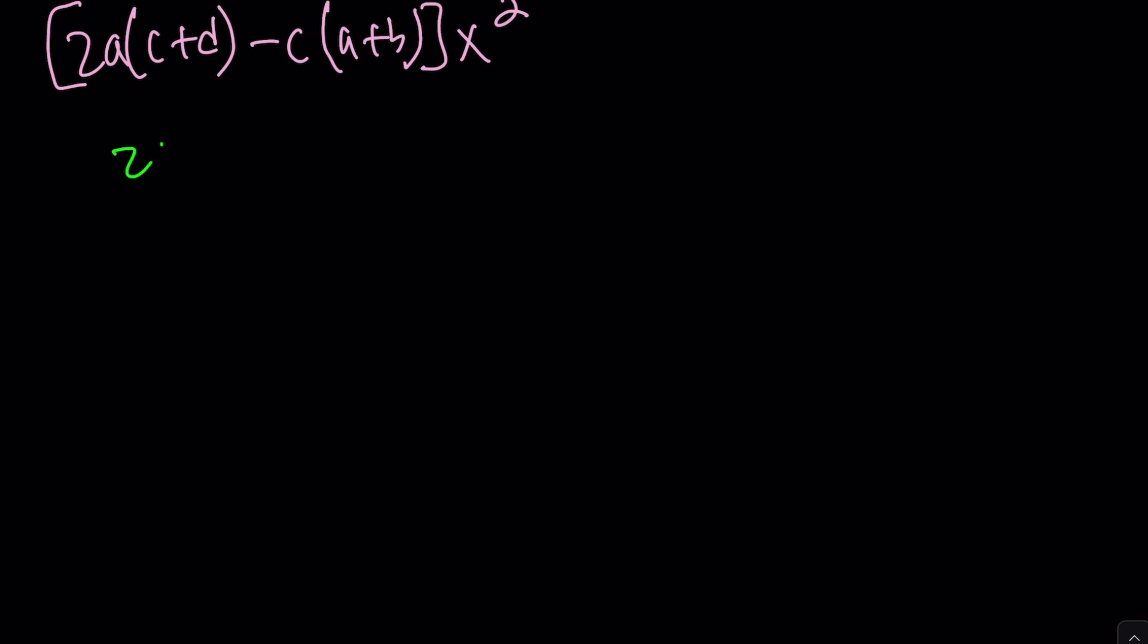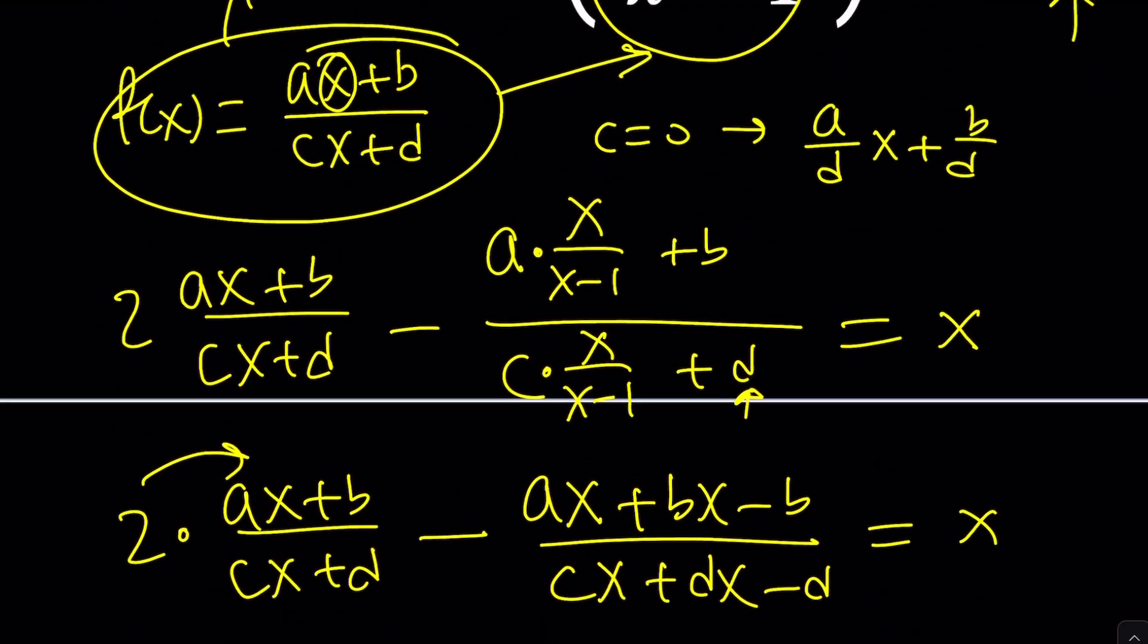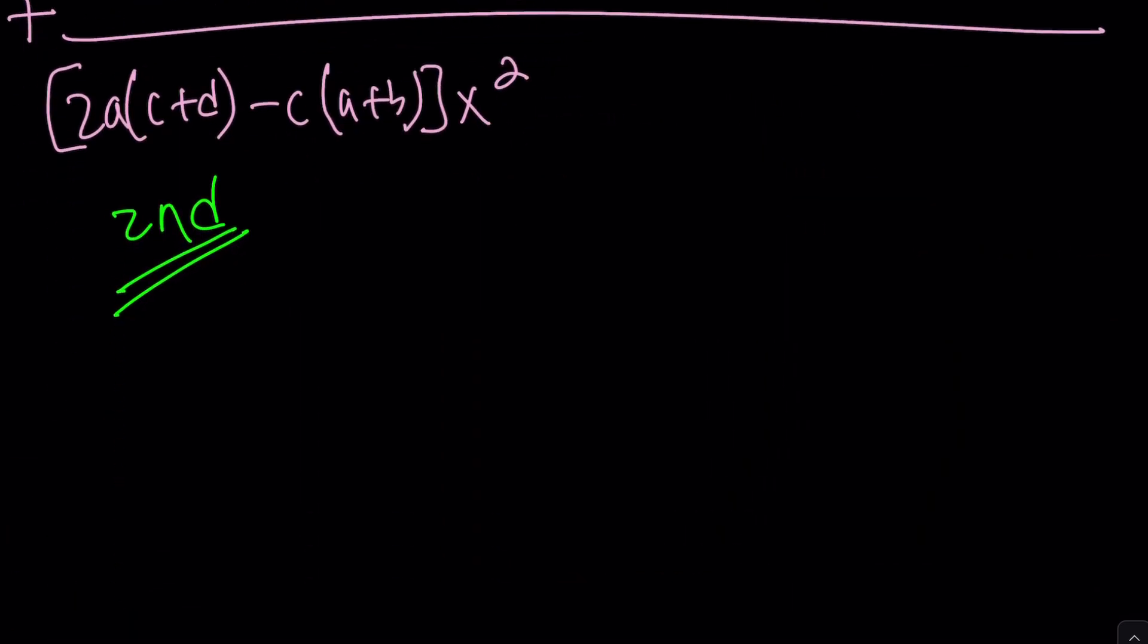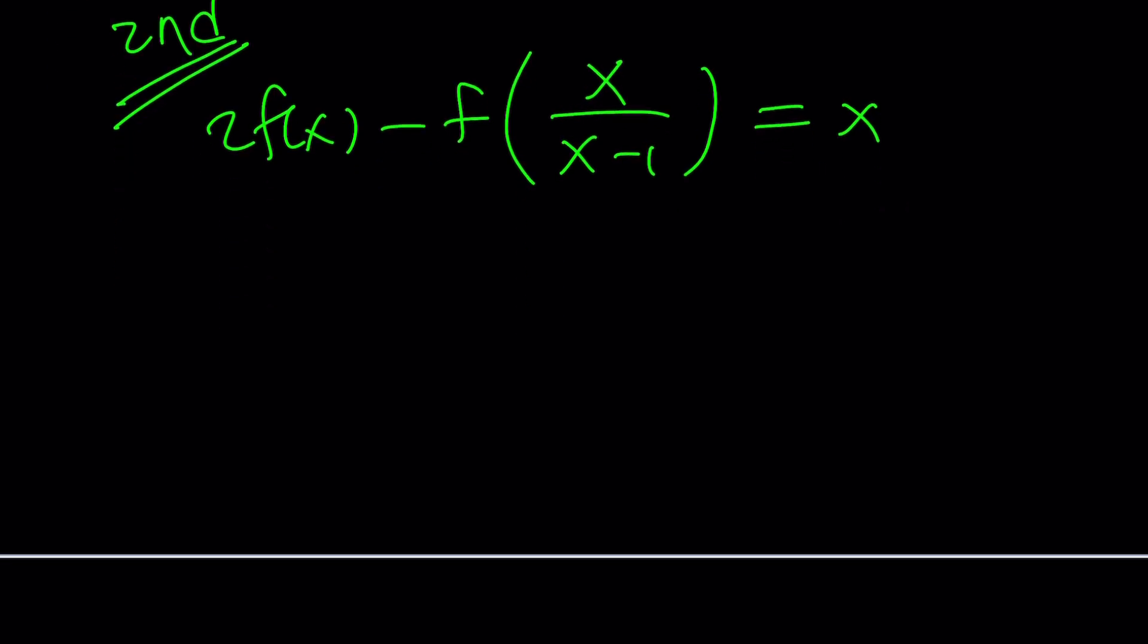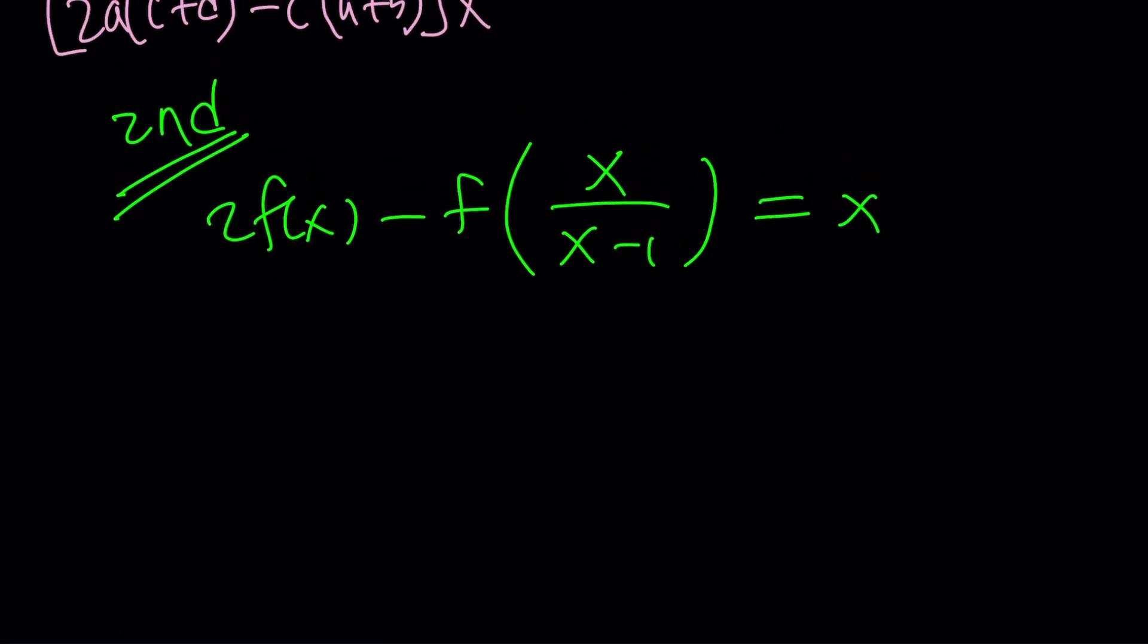So let's go ahead and see how we can solve this problem with the second method which is my favorite obviously. So we have 2 times f of x minus f of x over x minus 1 equals x and we're supposed to find f now. Instead of assuming that f needs to be rational or whatever, why don't we just do this? Let's replace x with something so we can get another equation and we can solve these two together and guess what that's going to be?